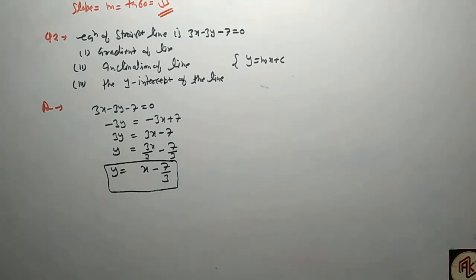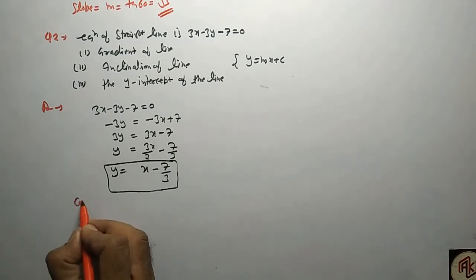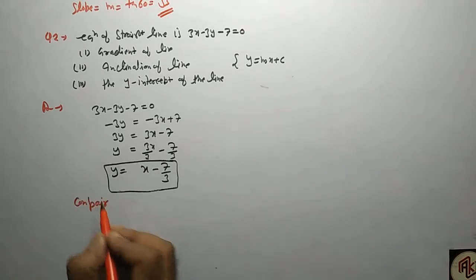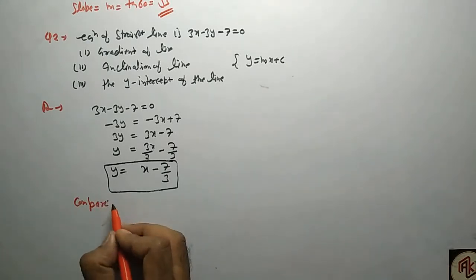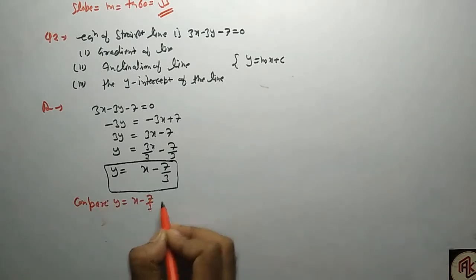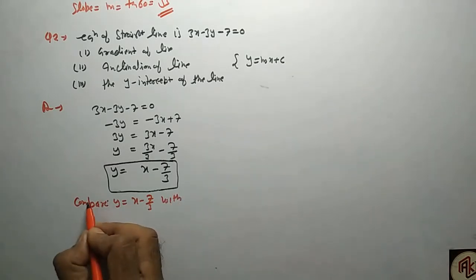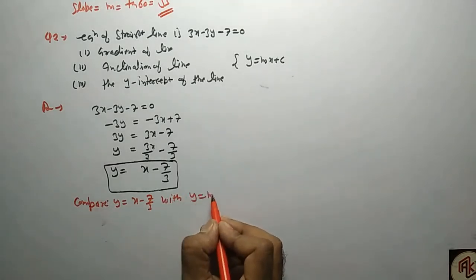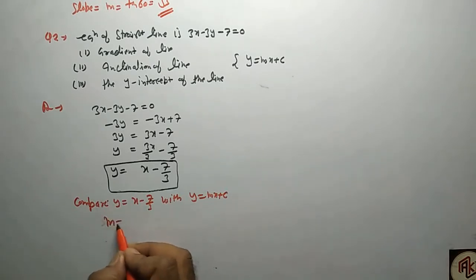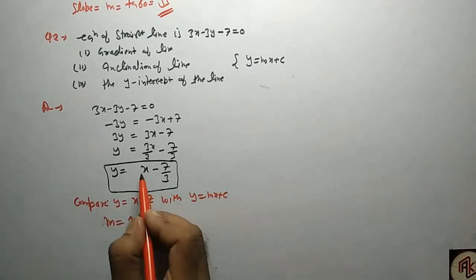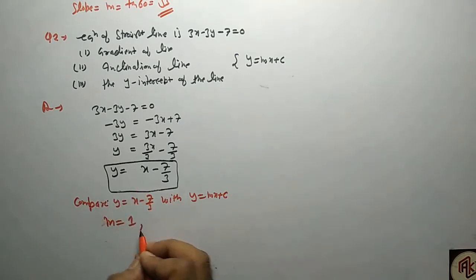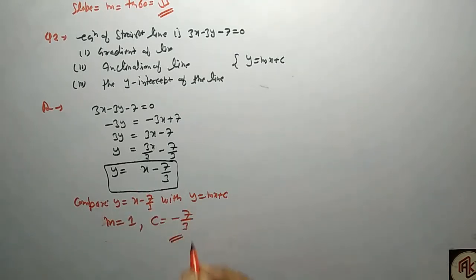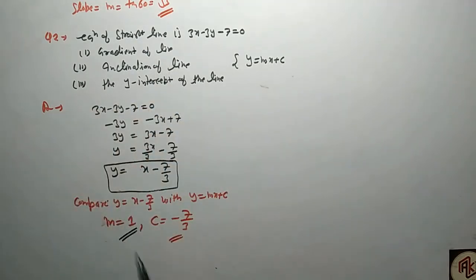अब हम compare करते हैं y = x minus 7 by 3 with y = mx + c। तो m कितना होगा? 1 — क्योंकि x के साथ जो coefficient होता है वो m होता है। और c कितना होगा? minus 7 by 3। तो gradient निकला जो कि slope के बराबर ही होता है।